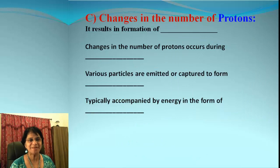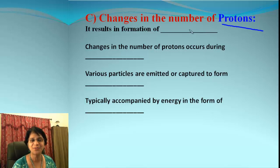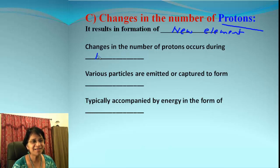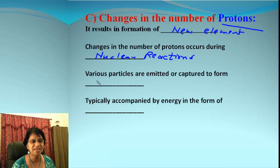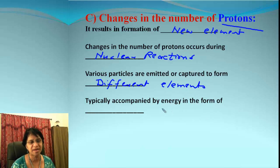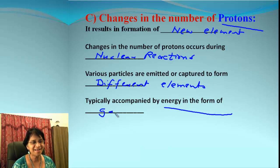Now let's find out what happens when there is a change in the number of protons. When the proton number is changed, it results in the formation of a completely different new element. These changes occur during nuclear reactions, which are not that common at all. During these reactions, various particles are emitted or captured to form different new elements, and they are associated with a large amount of energy. The main radiation involved is gamma radiation, and we will talk about these reactions later.